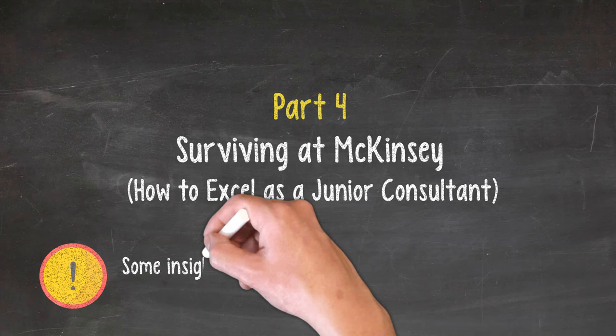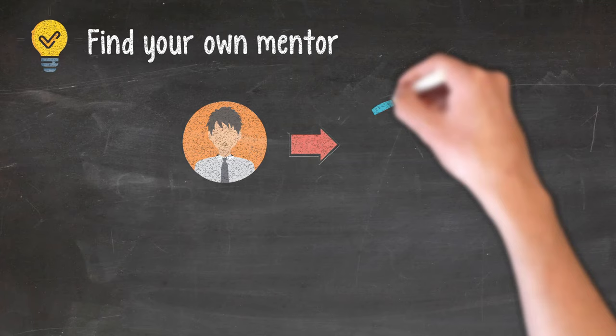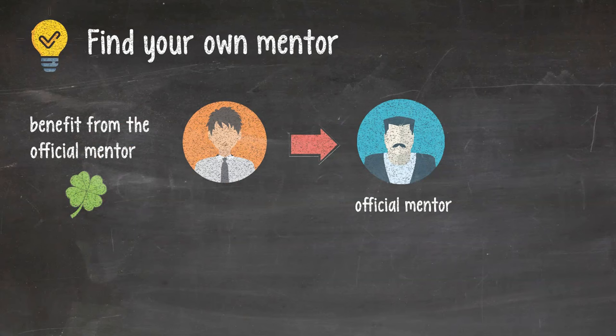Part 4. Surviving at McKinsey. In other words, how to excel as a junior consultant. Disclaimer. Some insights are clearly about Part 4, and I don't know why the author left them randomly throughout the book. So I pulled some of them into the section where they should belong. Tip 1. Find your own mentor. At McKinsey, every consultant is officially assigned a mentor who may not be in the same office. How much you benefit from the official mentor is pretty much a matter of luck. If you want great guidance, you have to go out and get your own. Get a few too. Don't stick to just one.